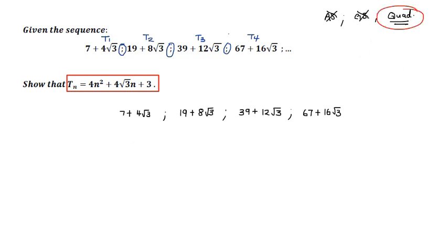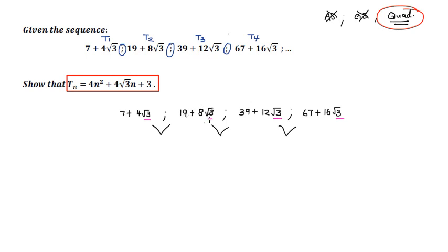Now that we've identified this as a quadratic sequence, we need to evaluate the first differences between all our terms, and we expect the second difference to be constant. To evaluate a difference you take the second term minus the previous one. Since we're working with surds, remember that to subtract surds you need to be dealing with like surds. Here we're lucky because all terms are in terms of √3, so we deal with the number part and the surd part separately.